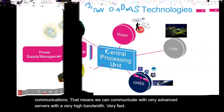In centralized processing, all raw data is directly uploaded to a central processing server where all processing is done and the required action is determined.